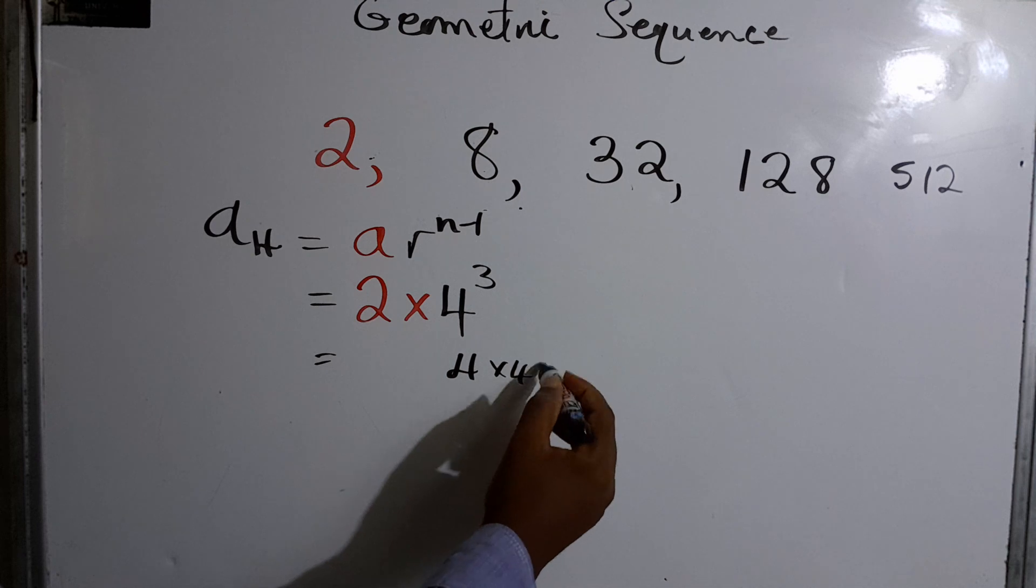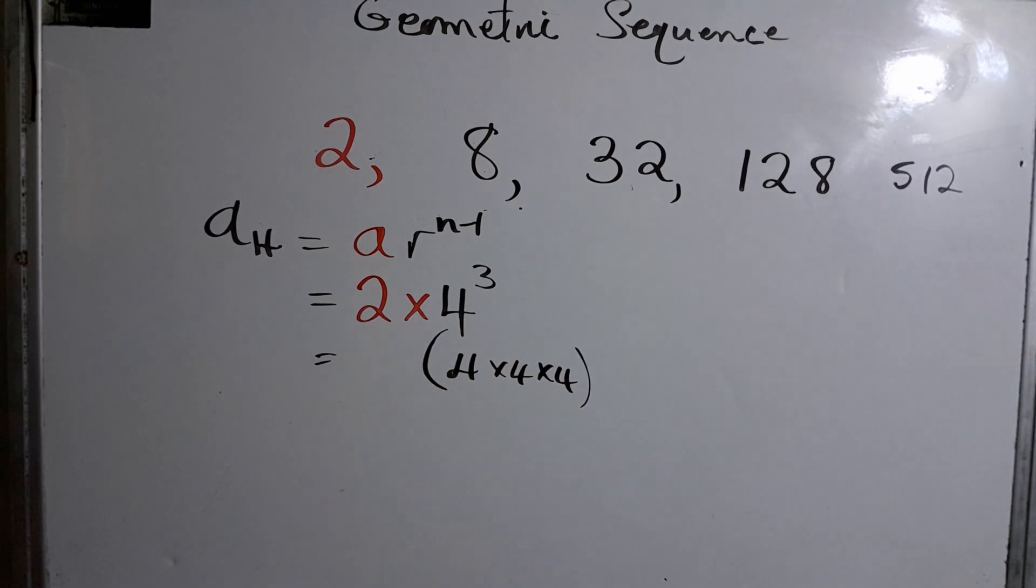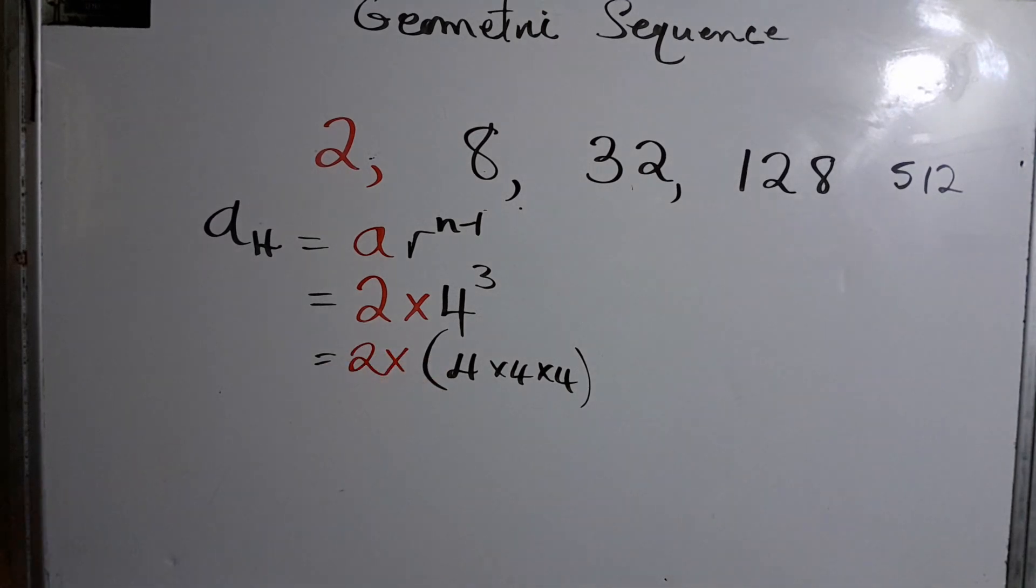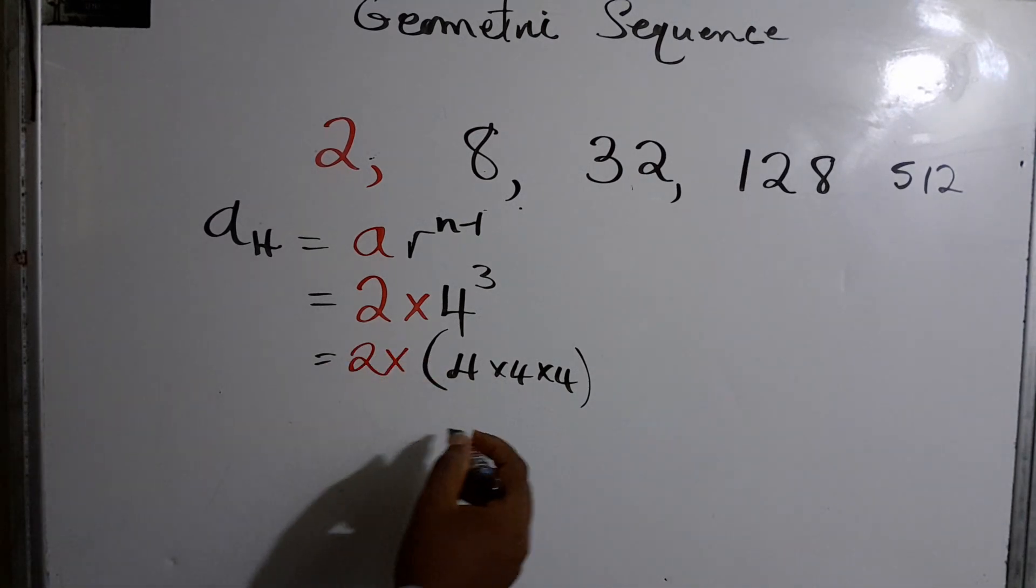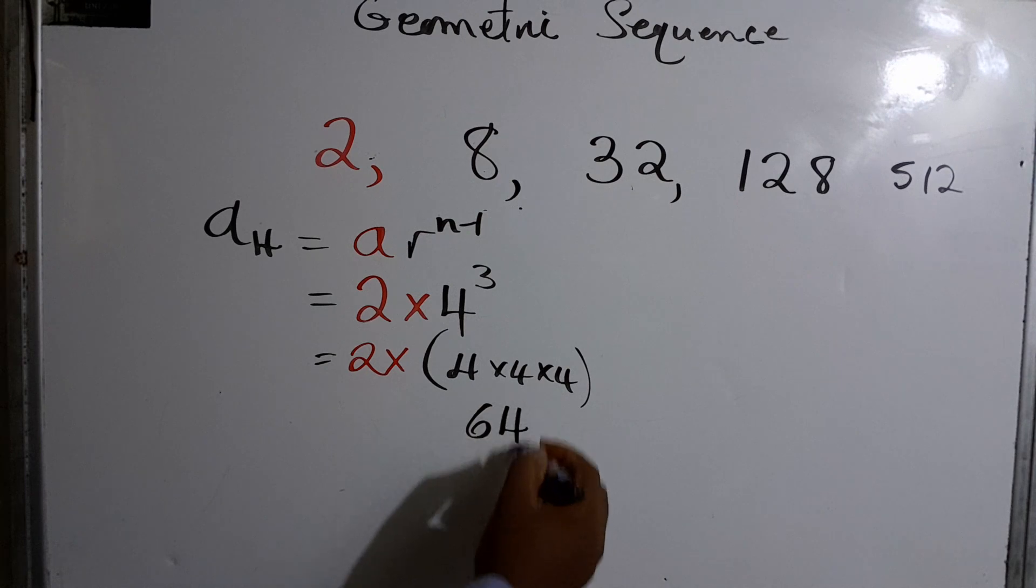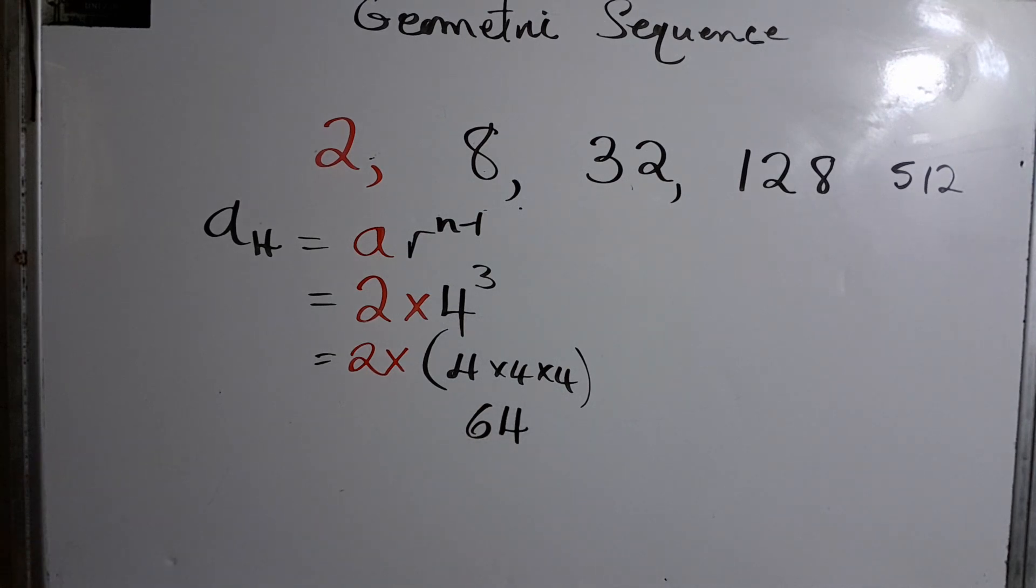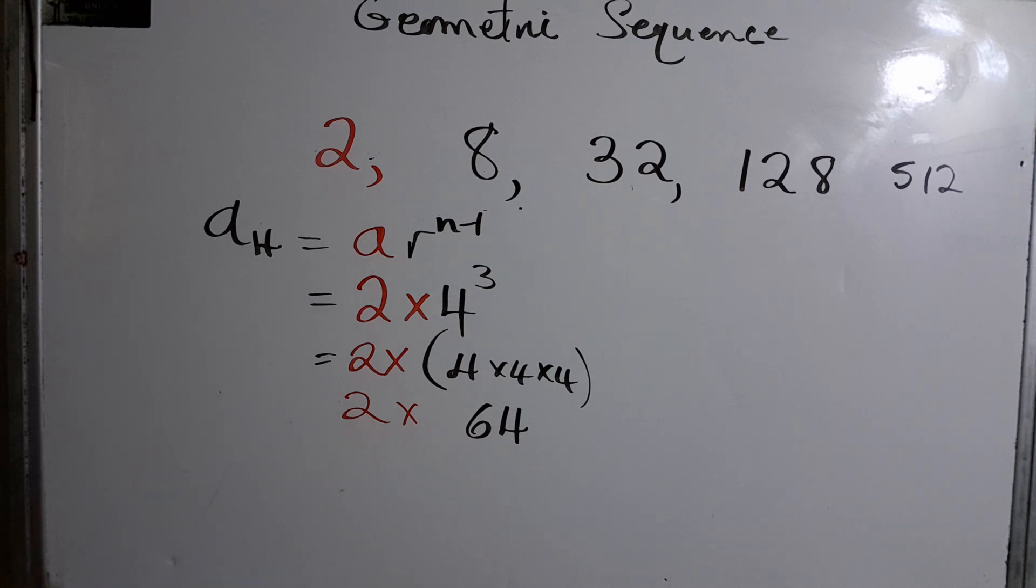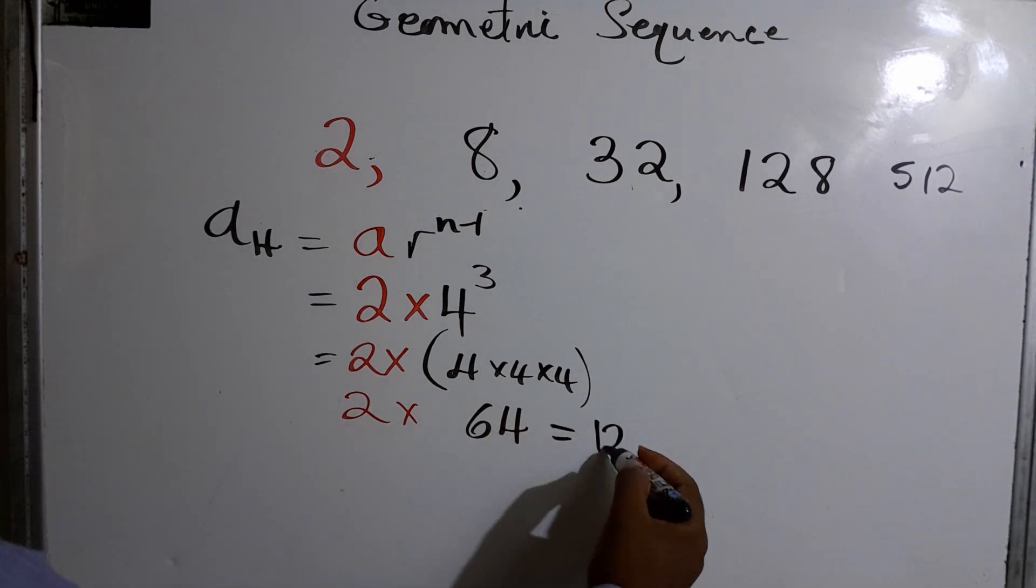And we multiply that by the two when we are finished, because remember we have to do the power part first. Four times four is sixteen, that gives us 64. And then we multiply two times 64, which is equal to 128.